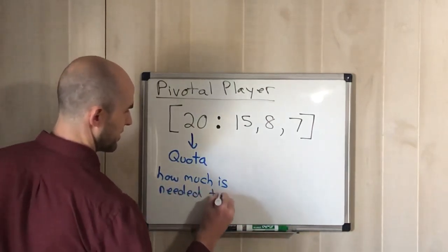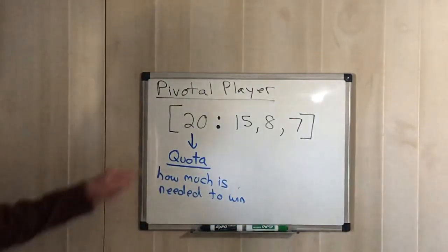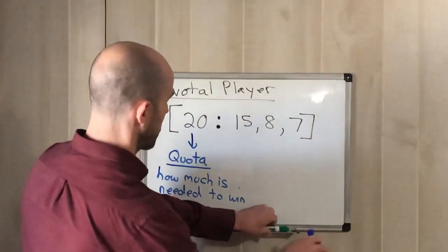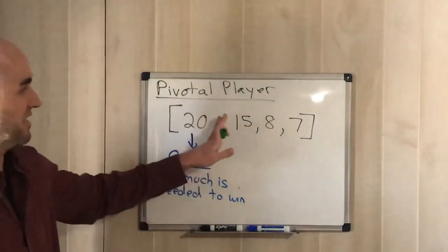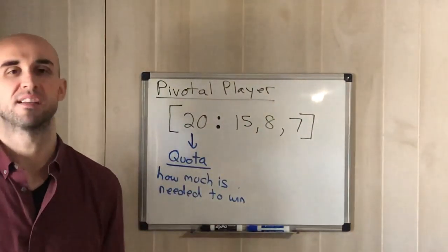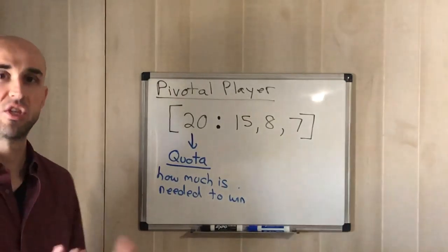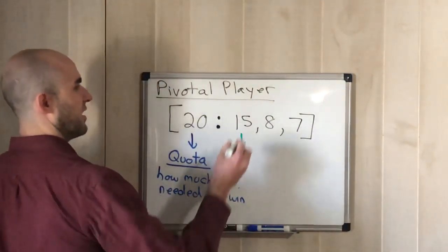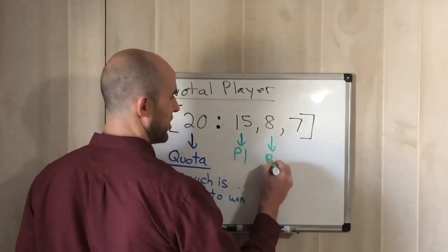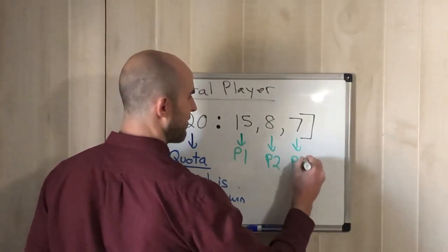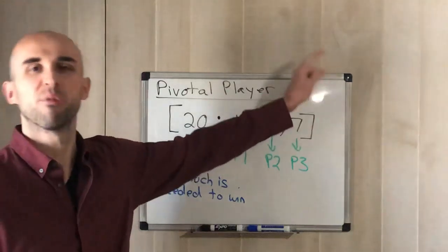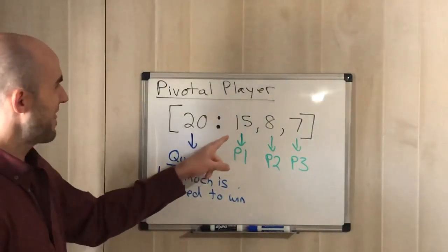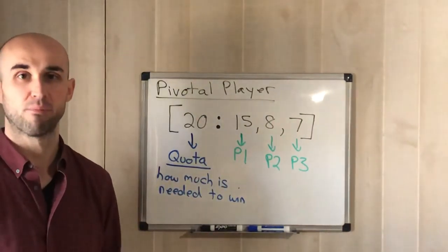The first number is what we refer to as the quota — that's how much is needed to win. So in this case, we would need 20 points to win. The other three numbers represent three different players — it doesn't always have to be three, sometimes it could be four or seven. Those numbers represent how many points each player brings to the situation. So 15 is player one, 8 is player two, and 7 is player three.